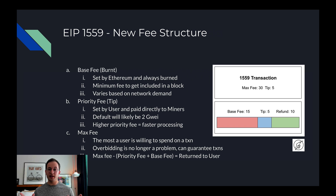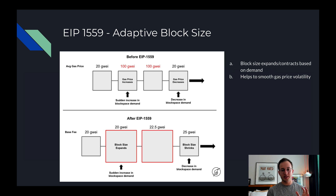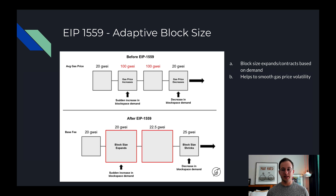Credit to the Daily Gwei for a lot of this information and the following graphic. The next big change with EIP 1559 is adaptive block size. Before EIP 1559, blocks are all the same size regardless of how expensive gas is. After 1559, you can see the block expands or contracts based on demand, so with a variable block size the network can better smooth out gas price volatility, which is obviously very beneficial to the user.